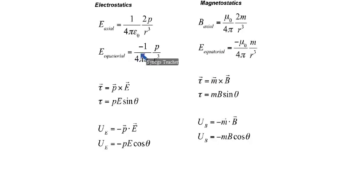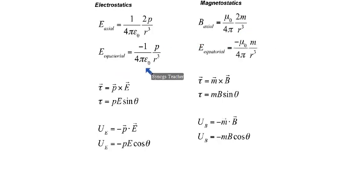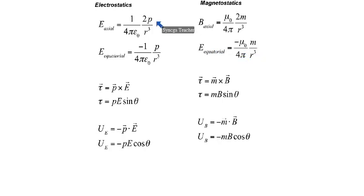Now we will discuss the mathematics involved in the axial and equatorial fields of a dipole for both electrostatics and magnetostatics. The axial electric field of an electric dipole is given by (1/4πε₀)(2p/r³). The axial magnetic field is given by (μ₀/4π)(2m/r³). Similarly, the equatorial electric field is (1/4πε₀)(p/r³), and the equatorial magnetic field is (μ₀/4π)(m/r³). Here we see that the electric dipole moment p is replaced by the magnetic dipole moment m, and everything else is similar.